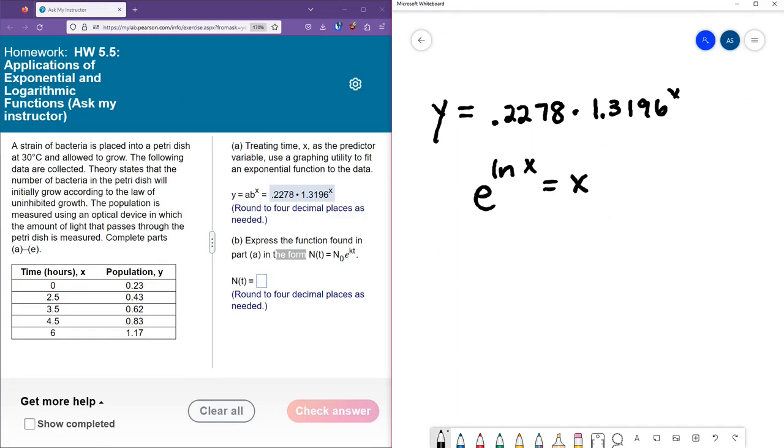So if we have e to the natural log of x, this is the same thing as x. The natural log and the e being inverses cancel those operations out, leaving you with what's on the inside. So I want to write this in terms of e. So I have 0.2278. And I'm going to write e to the natural log of all of this right here, 1.3196 to the x. So just as I demonstrated this property here, if we have e to the natural log, those are inverses of each other and cancel. Here we have e to the natural log. Those are inverses and they cancel. And that brings you right back to the original model. So this is something that we are allowed to do because of those properties of logs and natural log, exponentials and logs.